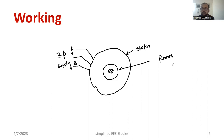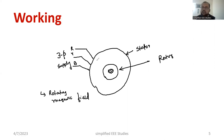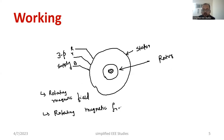Let us explain the working in a very simple manner. As soon as I apply the three-phase supply, there is a rotating magnetic field inside the stator, because the stator is a magnetic material — so there is production of a rotating magnetic field. Then the rotating magnetic field is linking with the rotor conductor. Remember, the rotor is made up of copper.